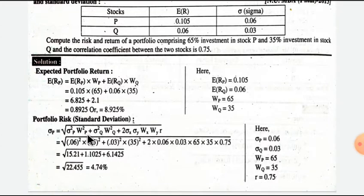Weight of P squared times sigma P squared plus weight of Q squared times sigma Q squared plus 2 times sigma P times sigma Q times weight of P times weight of Q times r, the correlation coefficient.